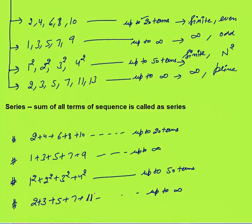Next is series. What is a series? A series is simply the sum of all the terms in a sequence. You can see that our first sequence was 2, 4, 6, 8, 10 — the series will be 2 + 4 + 6 + 8 + 10 up to 20 terms. If we add all the terms in a sequence, we will get the series.